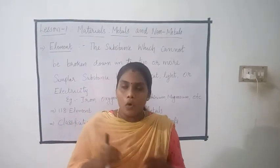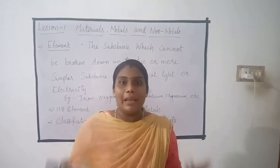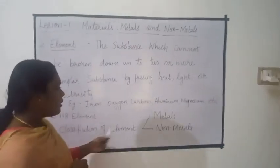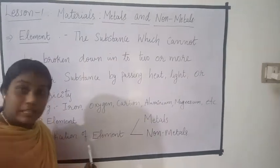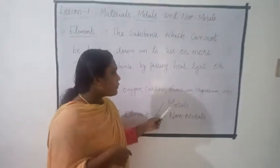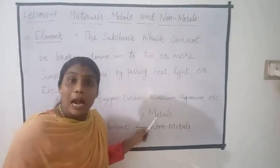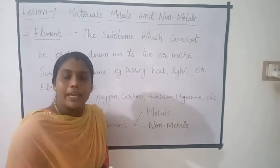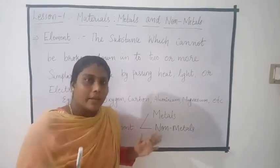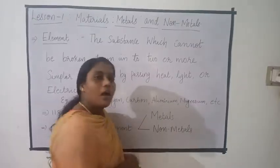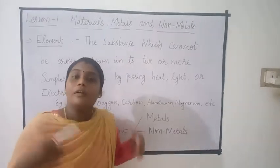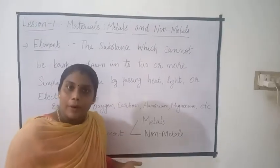How they react with others — that is property. Based on the properties of the elements, we can classify the elements into two. That is the classification of elements: metals and non-metals. Each element that comes under metals has similar properties, and elements that come under non-metals have similar properties. Compared to each other, the properties of metals and non-metals are different.